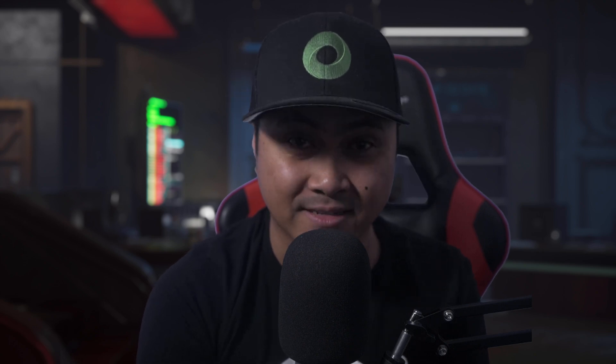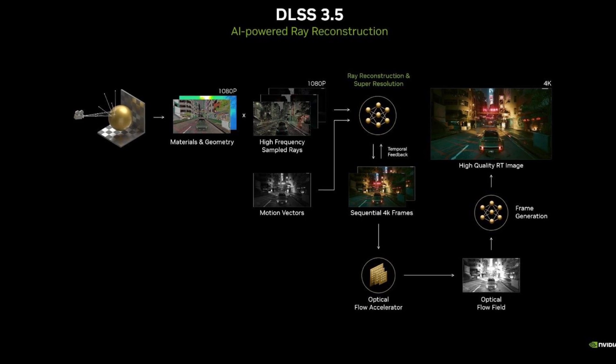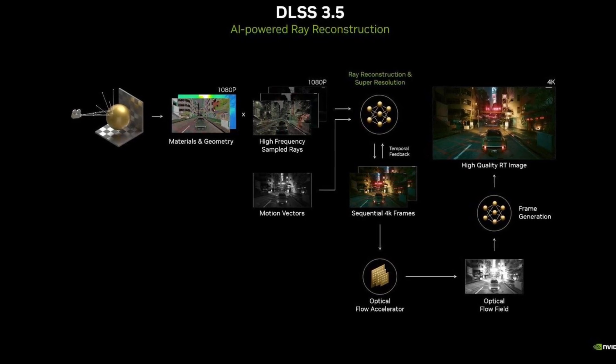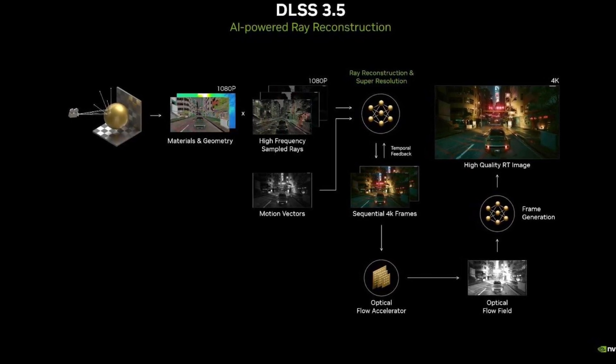This is where ray reconstruction comes in handy. Ray reconstruction's job is to replace traditional denoisers like temporal and spatial. Instead of calculating multiple frames or blending in pixels to fill in the holes, it uses an NVIDIA supercomputer-trained AI network that generates or reconstructs pixels in between the sampled rays. In a nutshell, ray reconstruction is replacing pixels with pixels it was trained on in real time.